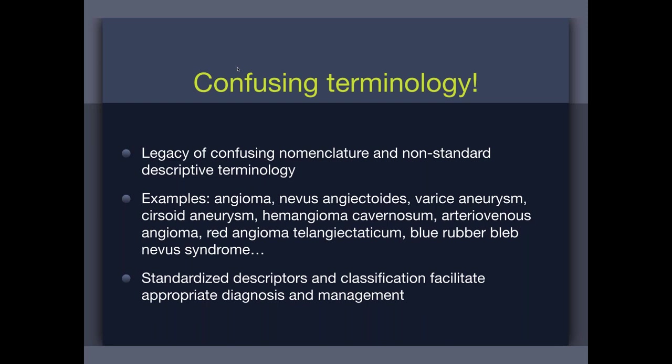I've listed some terms on the slide that are bad terms and should be avoided. One key point: it's important to distinguish tumors from non-tumors. When you call something an angioma, lymphangioma, or anything with the suffix '-oma,' you're saying the lesion is a tumor — that's what '-oma' means. Within the spectrum of vascular anomalies, it's very important to figure out what's a tumor and what's not, because that is the main point of distinction for these entities.